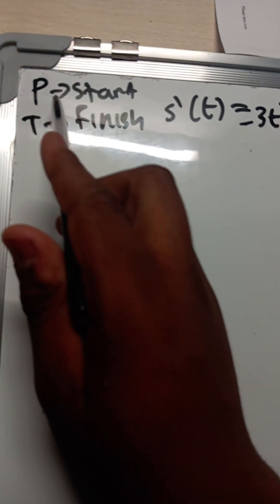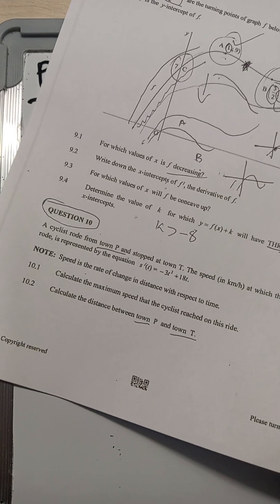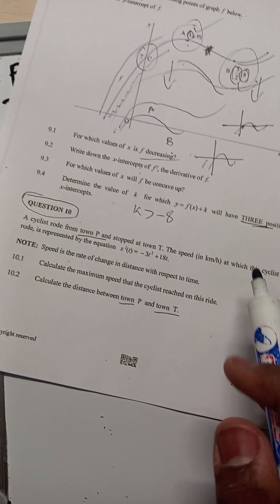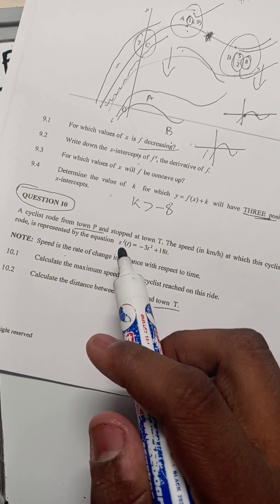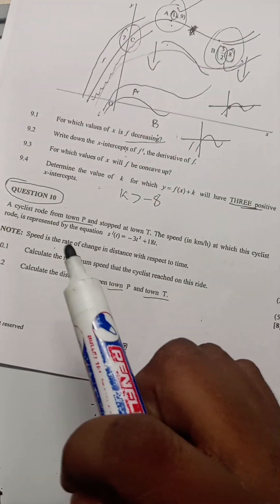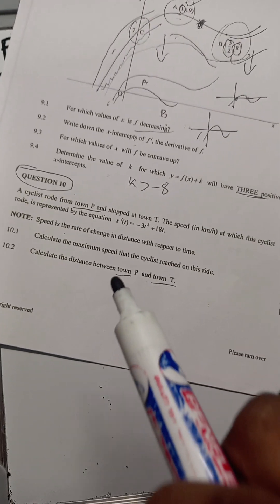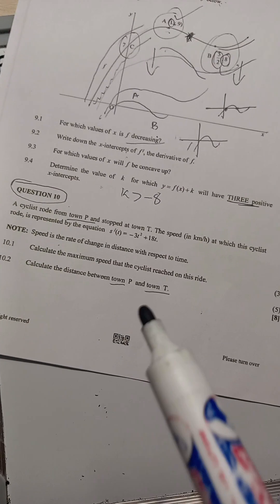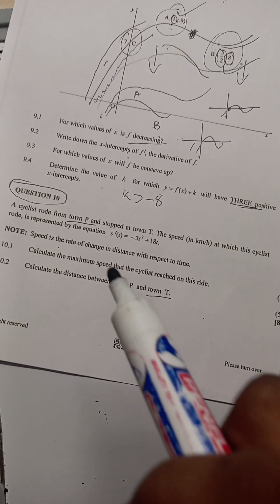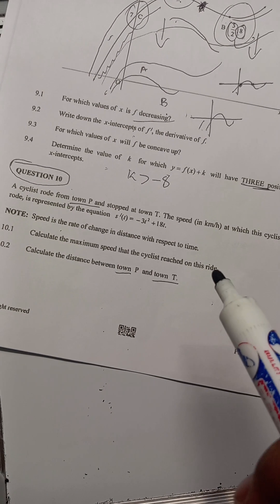The equation we are given is basically the derivative of the original distance equation, so there is an original function s(t) underneath. We have to find the time it takes for the cyclist to travel from town P to town T.